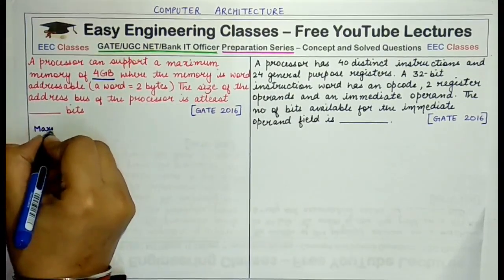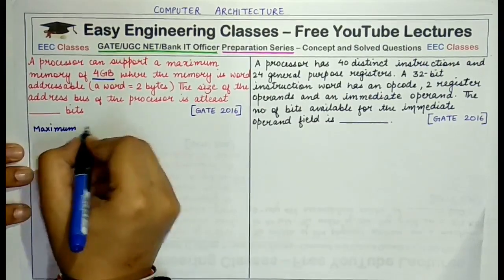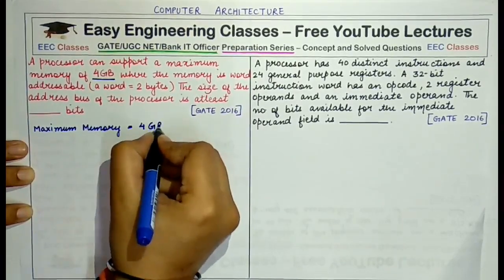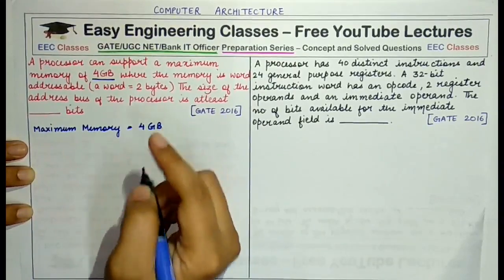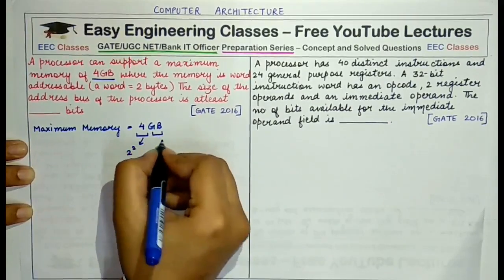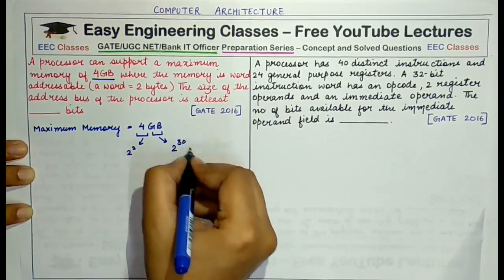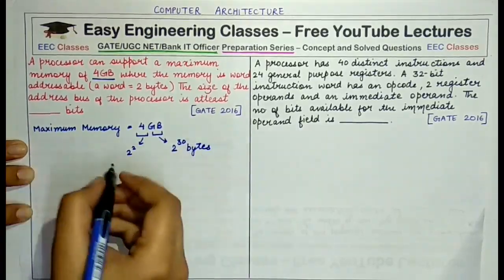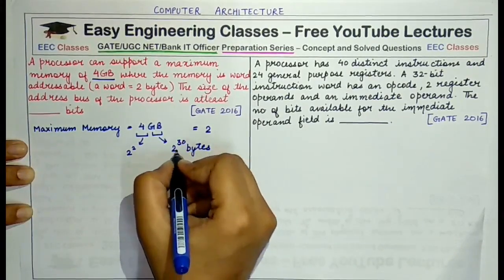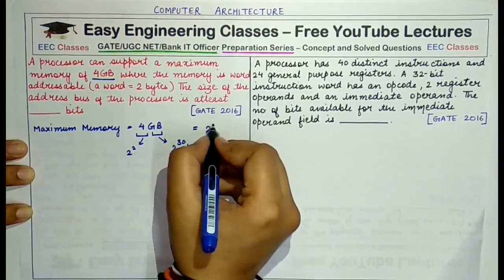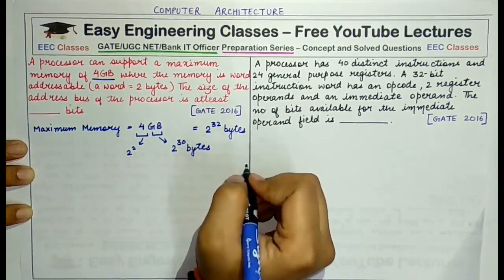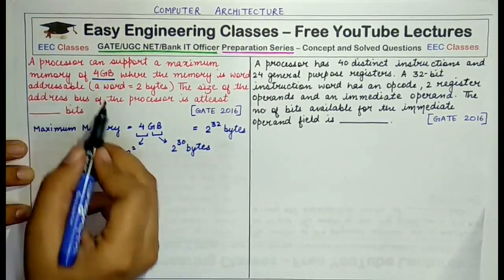Since we are given that the maximum memory is 4 GB, converting this into bytes: maximum memory equals 4 GB. You can convert this value in powers of 2 — 4 can be represented as 2 raised to power 2, and 1 GB equals 2 raised to power 30 bytes. So the total memory equals 2 raised to power 2 multiplied by 2 raised to power 30, which gives 2 raised to power 32 bytes in all. Next, we are told the memory is word addressable.